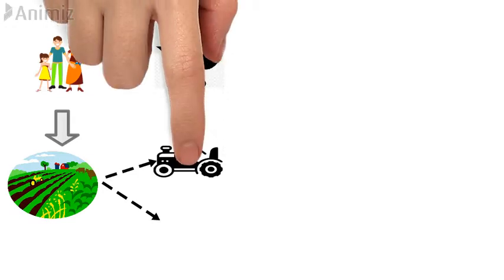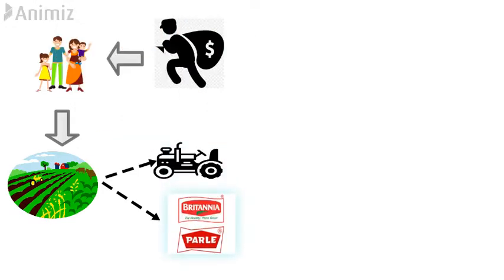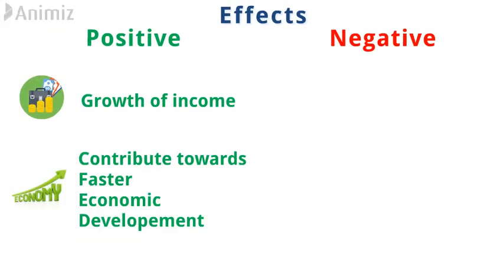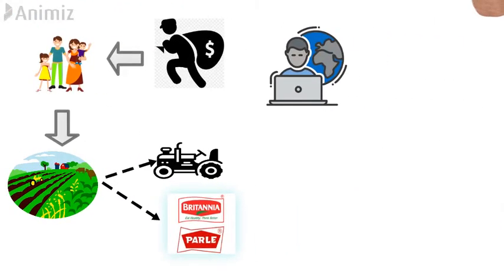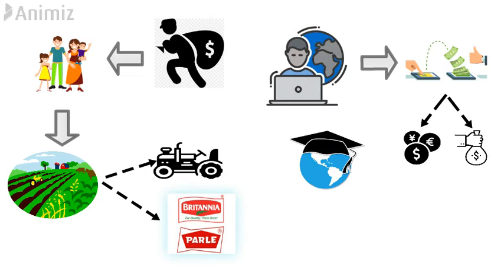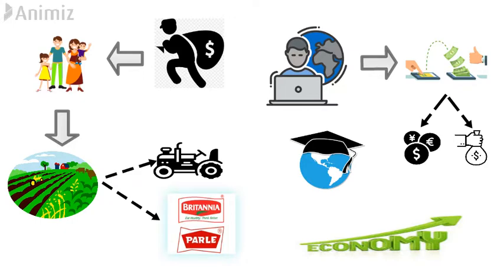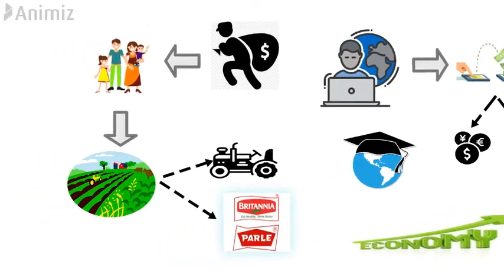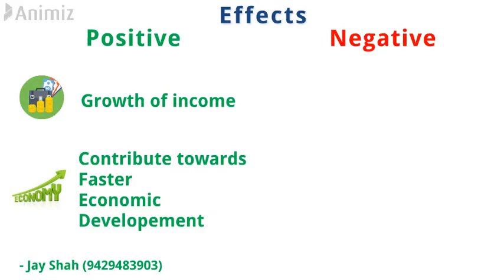Agriculture sector will also develop agriculture-related business and agro industries. In this manner, growth of income results in development of many industries. Second positive effect is contribution towards faster economic development. When people migrate to foreign countries, they send some portion of their income to India, increasing inflow of foreign exchange and providing investment to Indian businesses. Students who go abroad for higher studies bring back expertise and knowledge that help develop the economy faster. When an educated and skilled person migrates to urban area, it has positive effects, but when an unskilled person migrates, it gives negative effects.